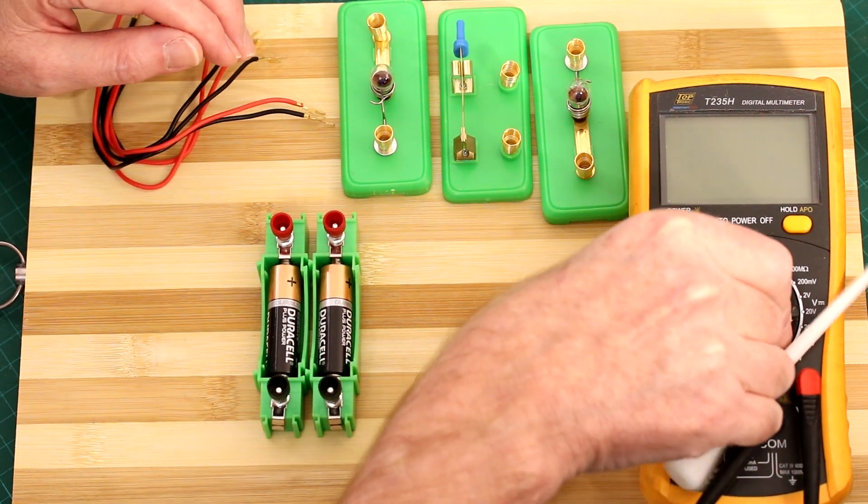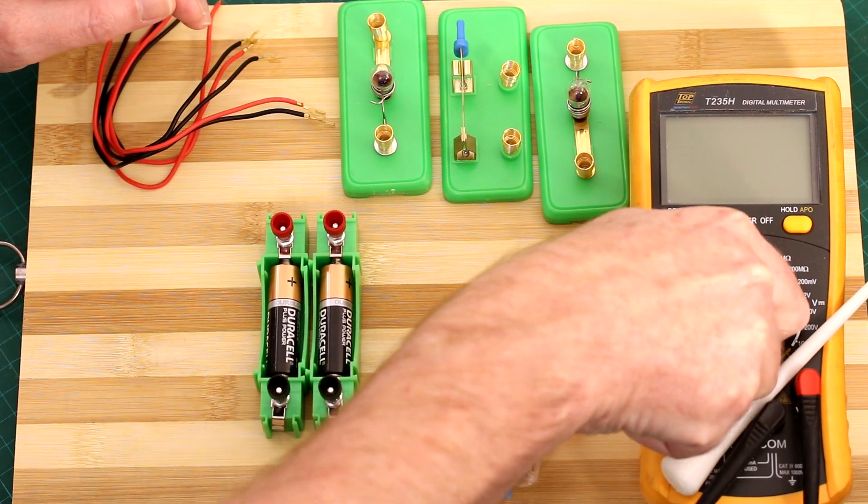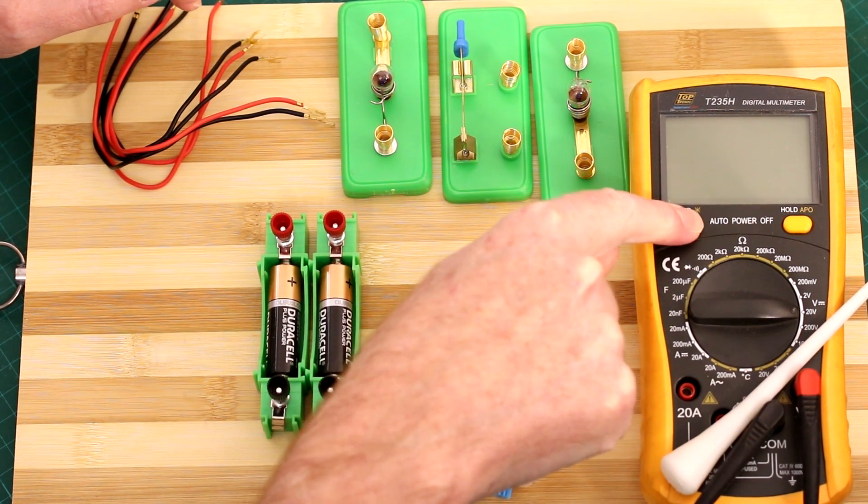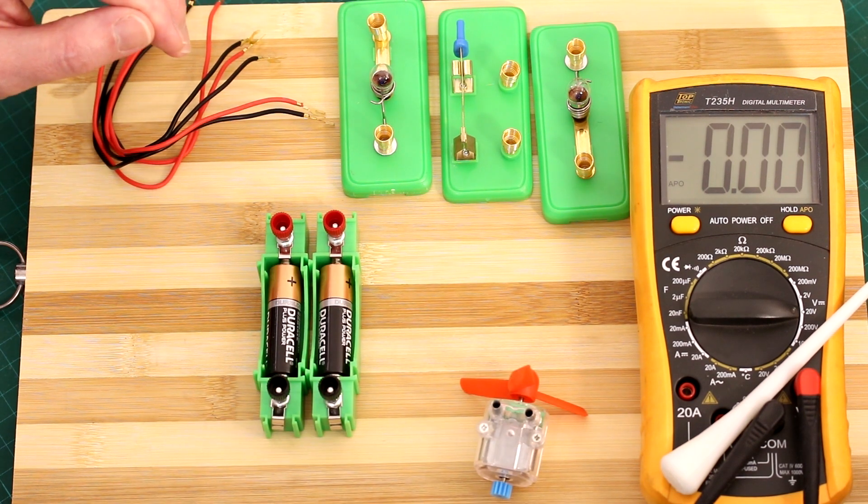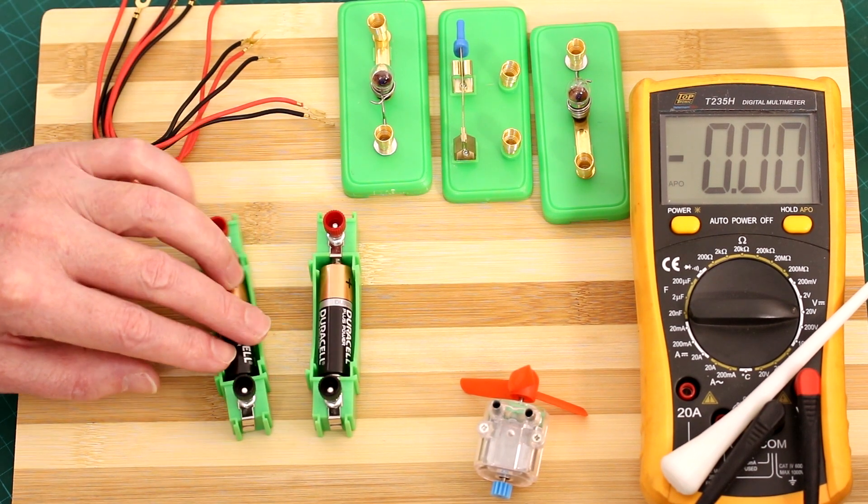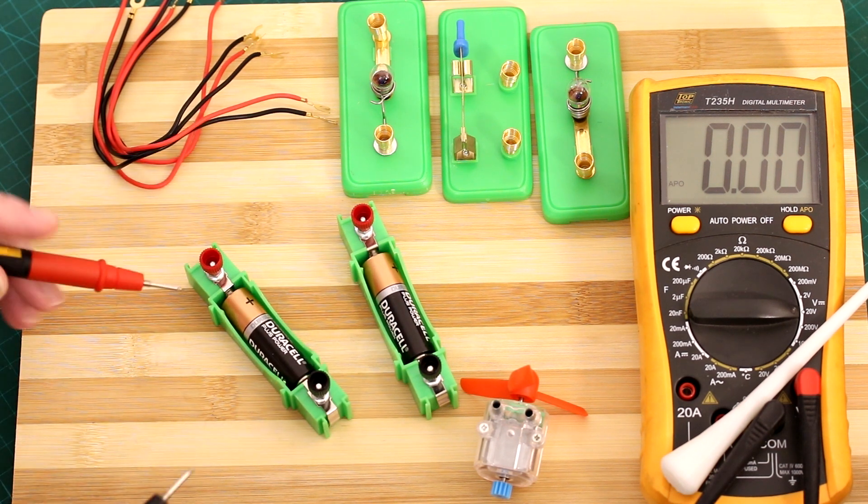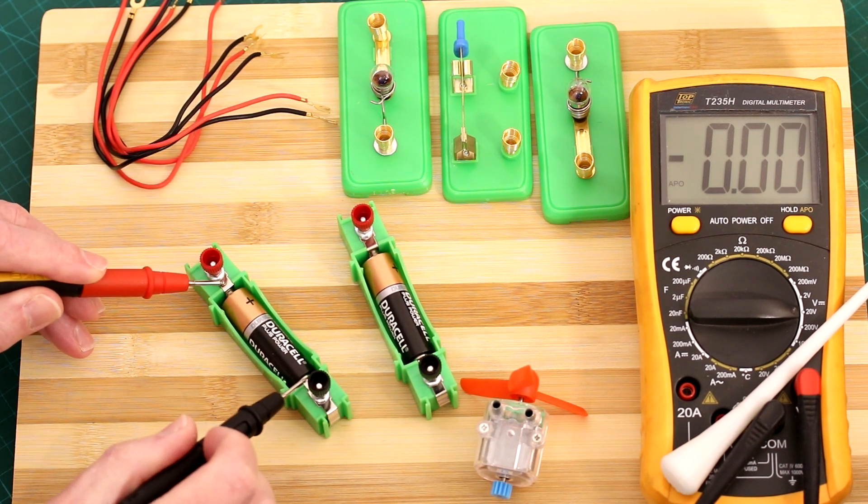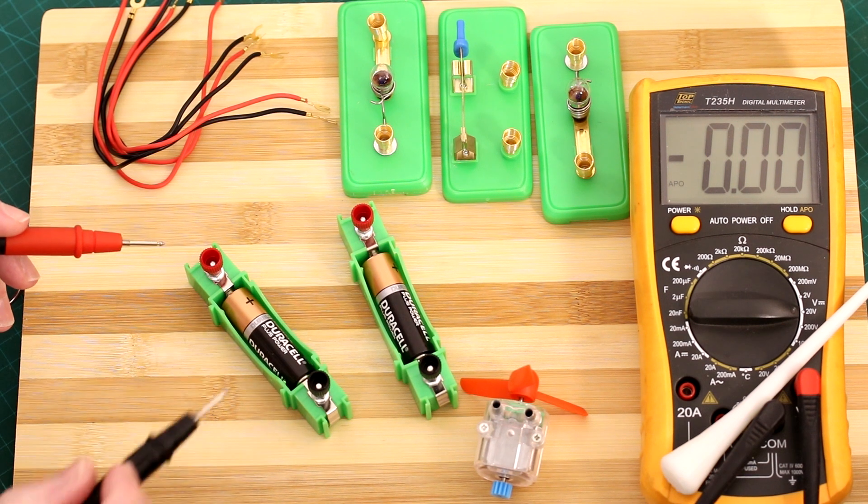So starting with the basics, let's leave it on 20 volt scale. Let's take a measurement of a fresh battery. That's one and a half volts, okay, that's a normal AA battery.